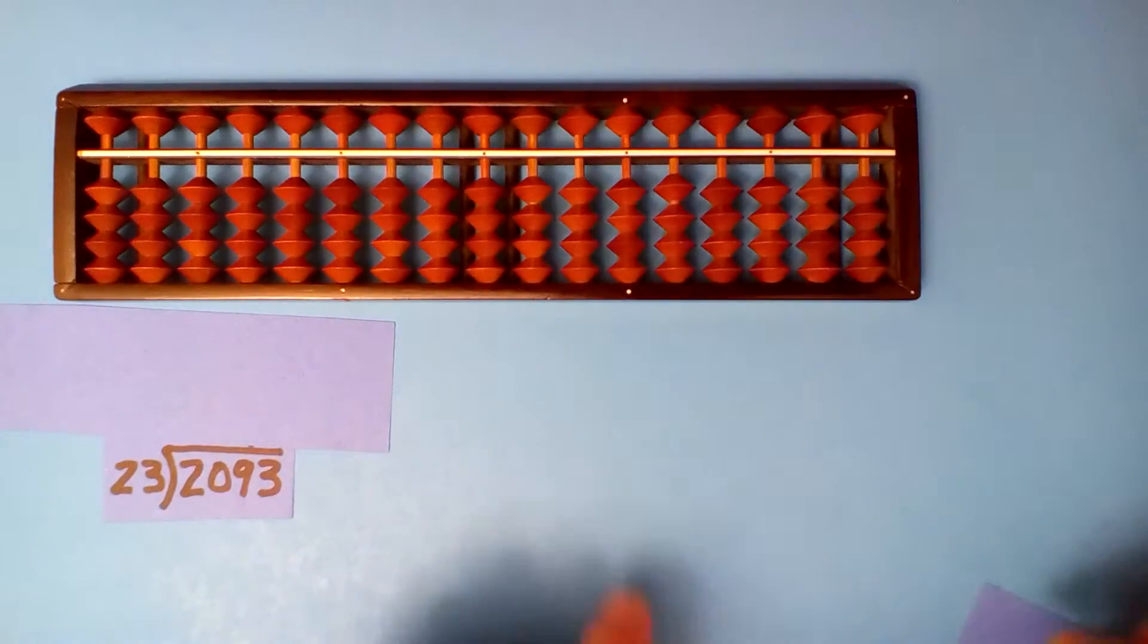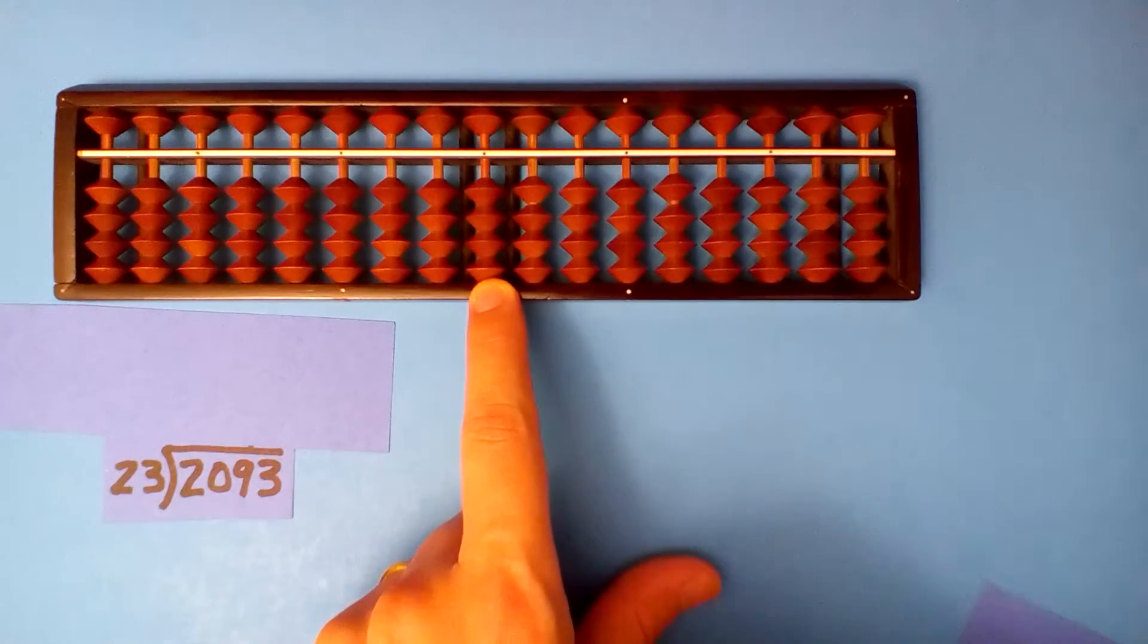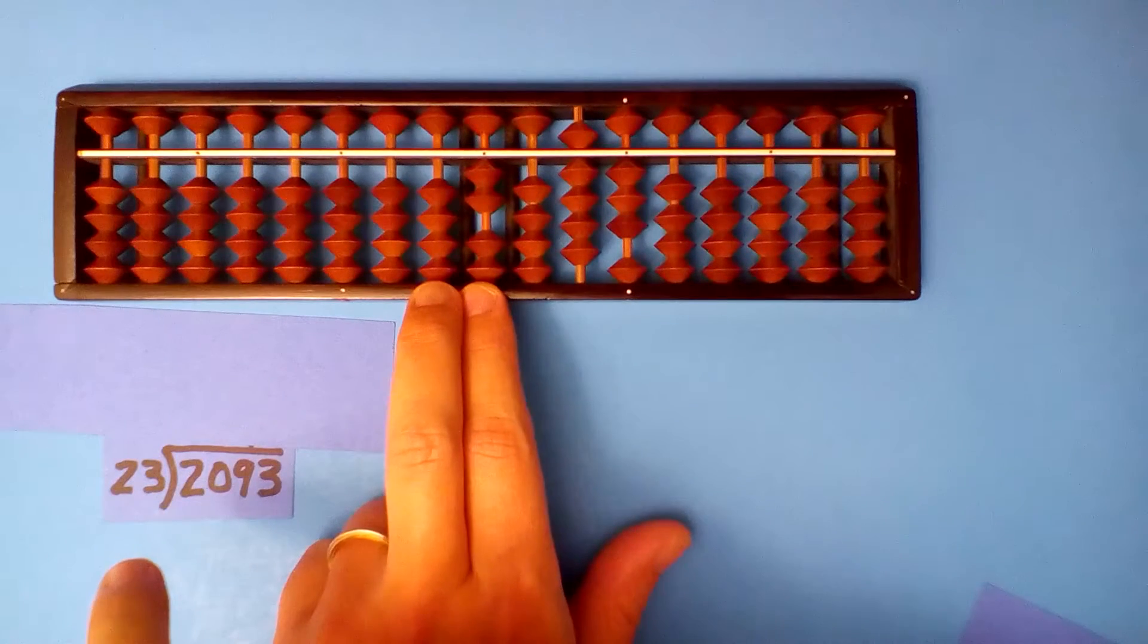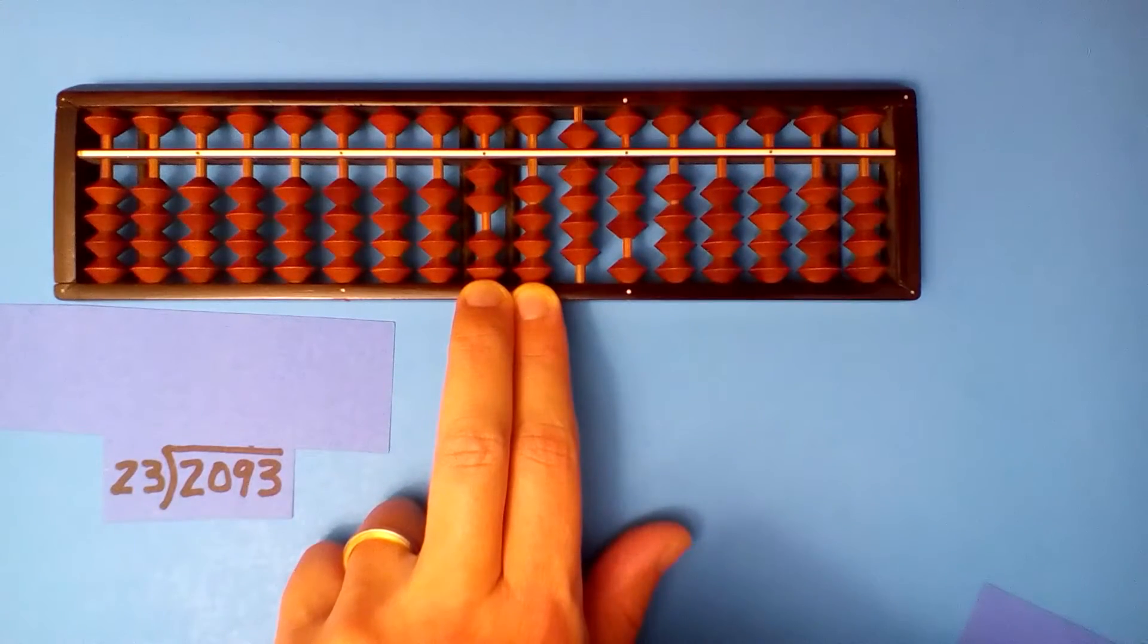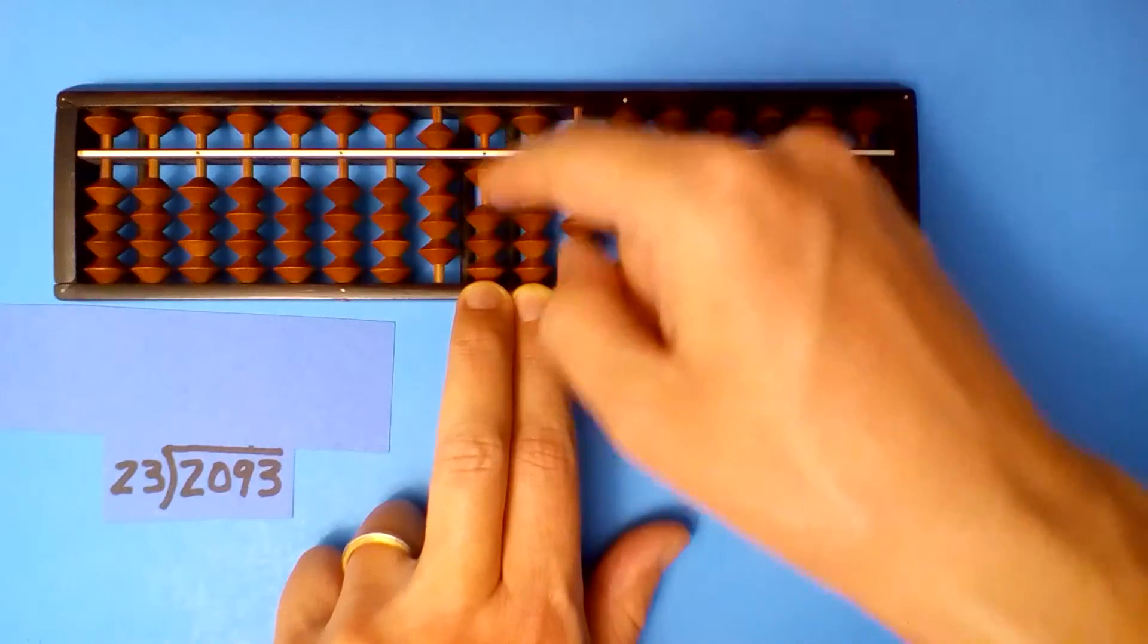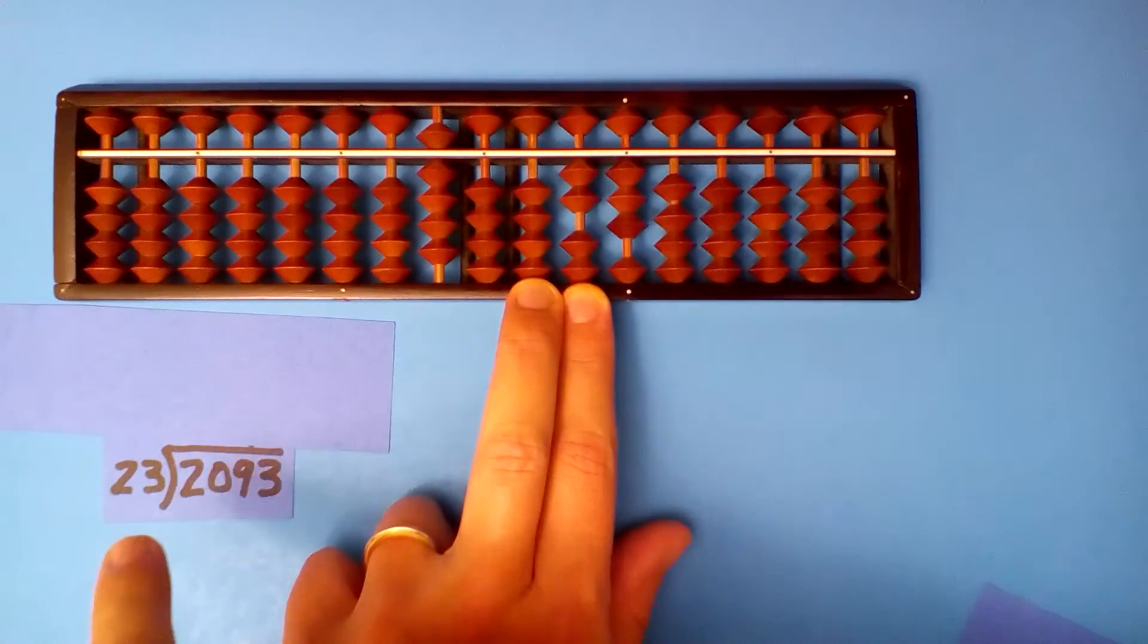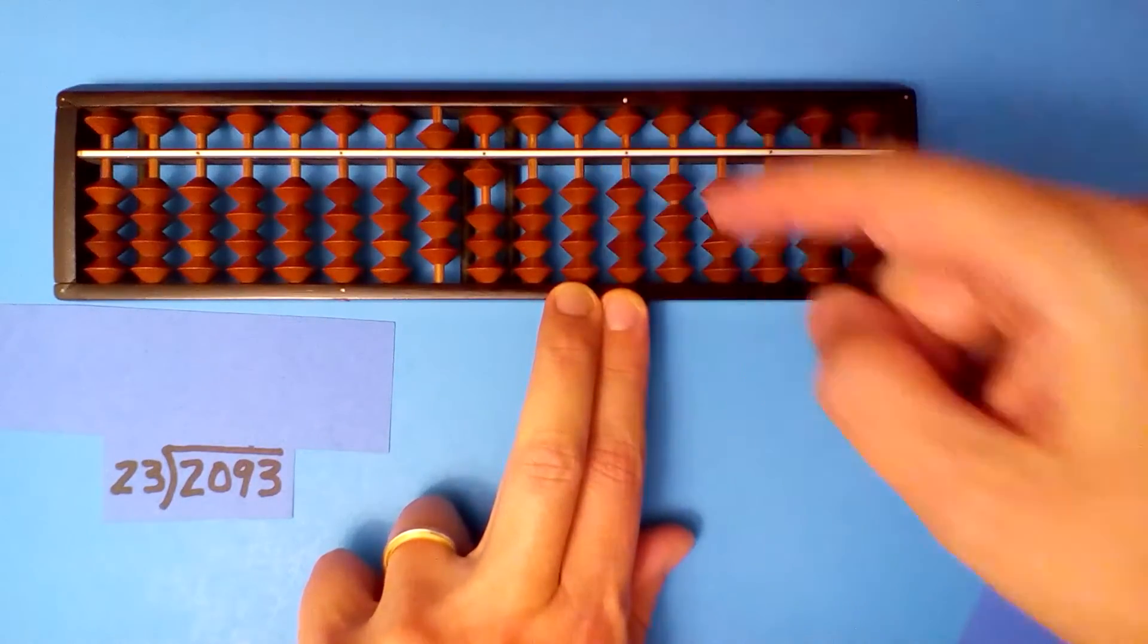2093 divided by 23. Two more digits in the dividend. Set up our dividend and divide. 2 goes into 2 once, but really this is 23, so I'd better try this instead. 23 into 20, 10 is too much, let's try 9. Multiply and subtract. 9 times 2 is 18, 9 times 3 is 27. 2 goes into 2 once and we're okay. Now 23 into 23 once. 1 times 2 is 2, 1 times 3 is 3. And our quotient is 91.